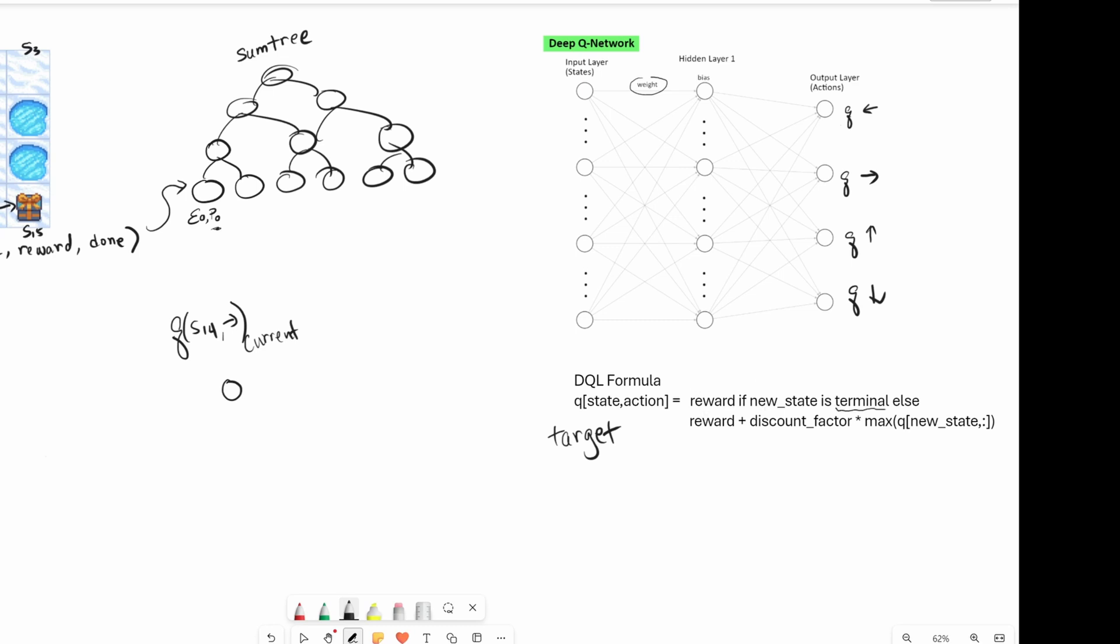Then using this formula over here, since we are at a terminal state when we go into state 15, we choose the top formula here, which simply returns the reward. So Q, state 14 going to the right, the target Q. The target Q is basically what we expect the Q to be, to eventually be. This is going to be one.